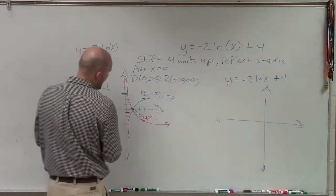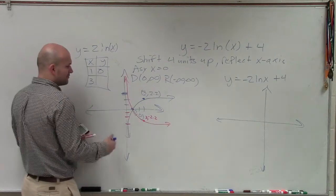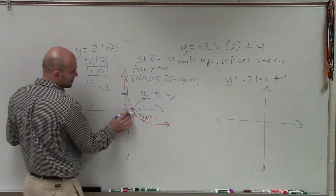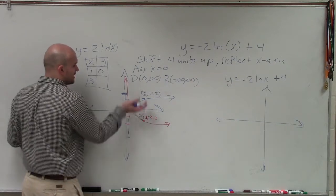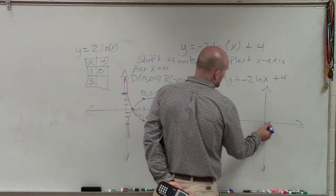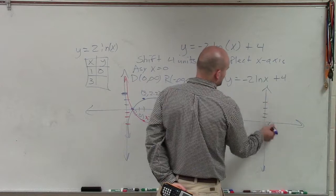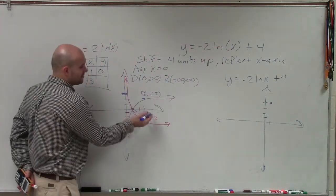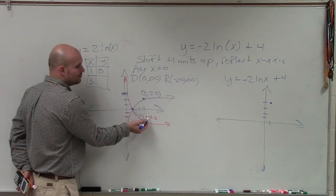Then I need to add 4. Well, if I'm now at 3, comma, negative 2.2, if I shift this up 4, let's take a look at this first one. If I take 1, comma, 0 and shift that up 4, it's going to be over 1, up 4. And then this point, if I shift it over, it's still going to be over 3. But now if I add 4 to negative 2.2...